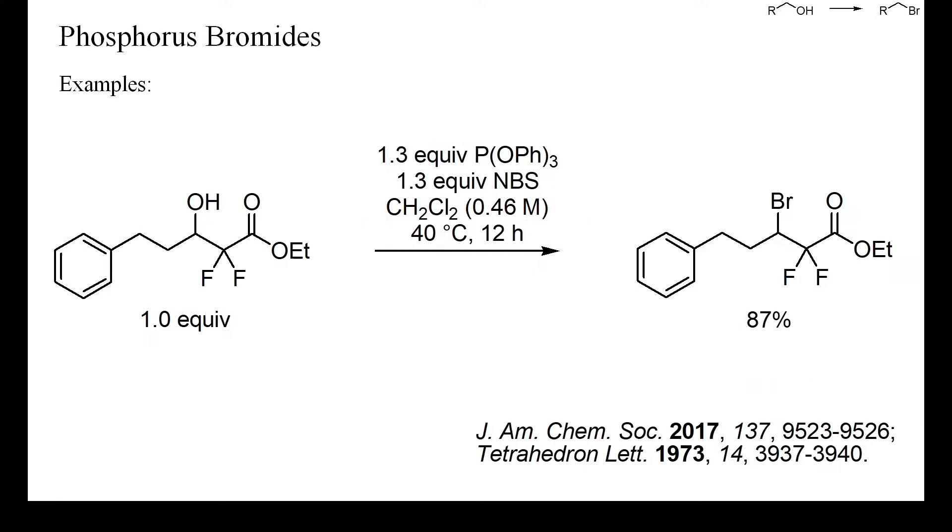One further alternative phosphorus source are triaryl phosphites, as shown here. A number of successful examples of the use of this reagent have been reported, but there is always the risk that aryl ethers may result as by-products.